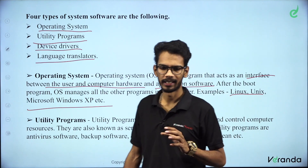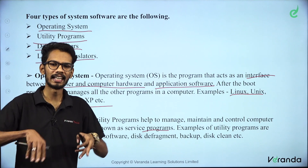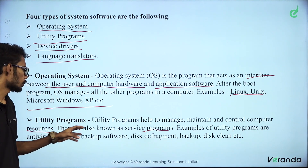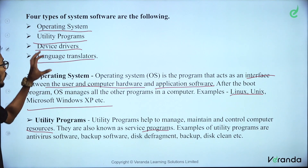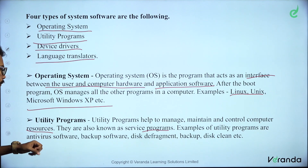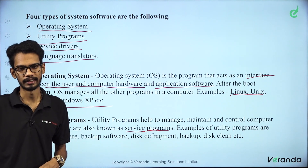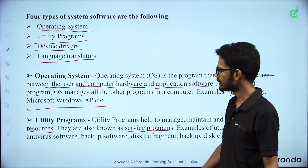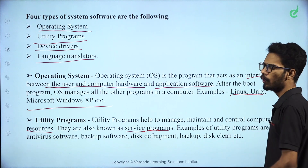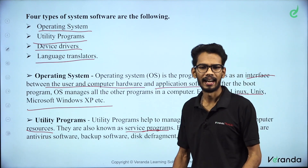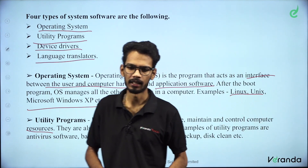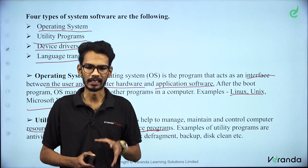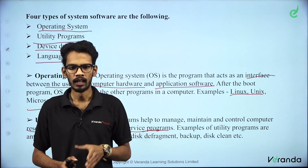Utility programs: in the computer we can manage, maintain, and control resources using utility programs. This is the utility program. There is another name — it is called Service Programs. Utility programs are also known as Service Programs. Examples of utility programs: antivirus, backup, disk defragment, disk cleanup — such programs manage, maintain, and control computer resources.